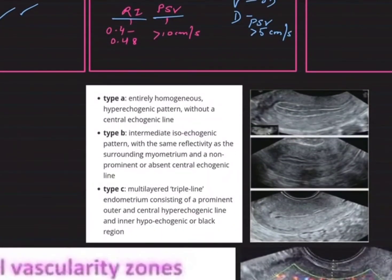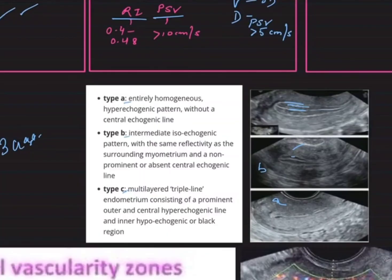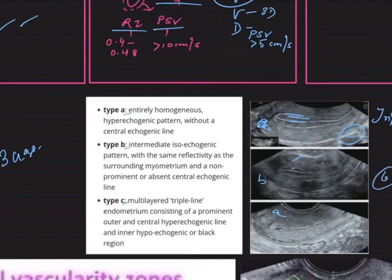There are three grades of endometrium. It is wise to describe them rather than label as A, B, or C. Type A is an entirely homogeneous hyperechogenic pattern. Type B is an intermediate isoechoic pattern with reflectivity same as the myometrium. Type C is the triple line pattern, where there is an outer and central hyperechoic line with an inner hypoechoic area. It is better to describe the morphology rather than simply call it A, B, or C.